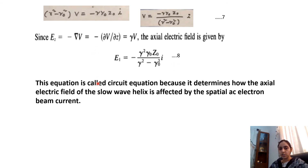In this section we have seen the derivation of the amplitude of the axial electric field in the slow wave structure.